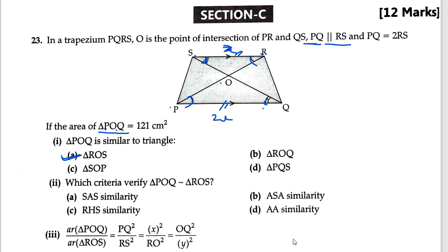Question 23 second part: which criteria verifies triangle POQ similar to triangle ROS? The correct answer uses angle-side-angle (ASA) — angle, angle, side, angle, angle, side. The sides are equal so angle-side-angle is the correct option.